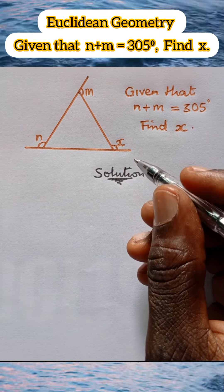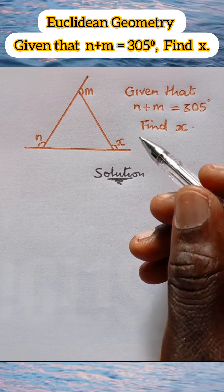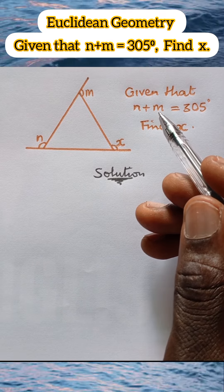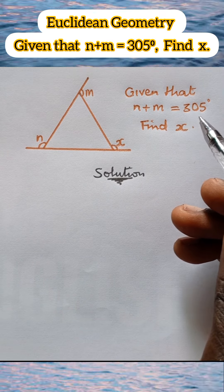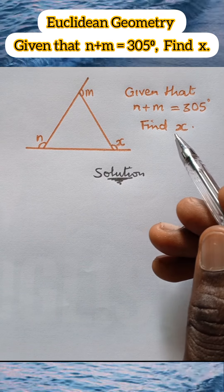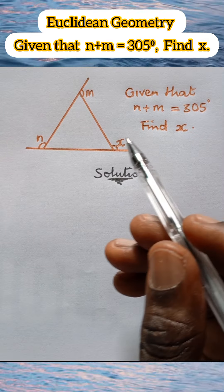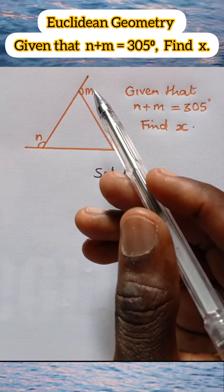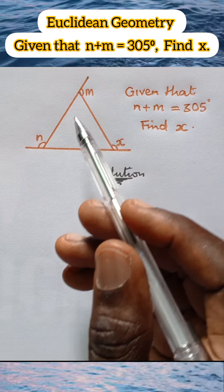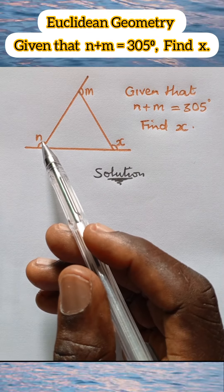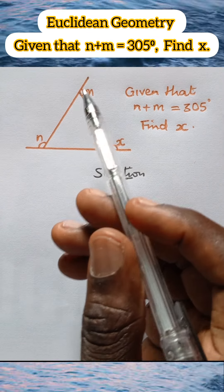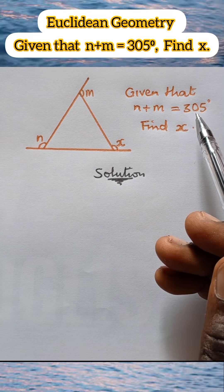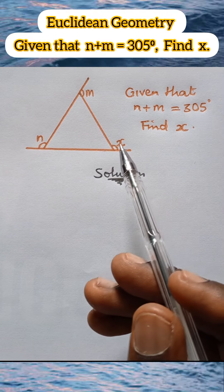Let's do this together. We are given that n plus m is equal to 305 degrees. We have to find x in the figure. We have this angle to be x, this angle is m, while this angle is n, and we have that n plus m is equal to 305 degrees. We have to look for the value of x.